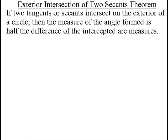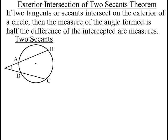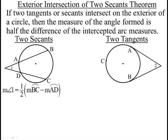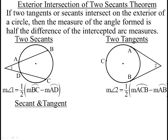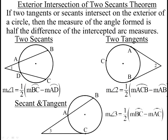This is the last theorem for today: the exterior intersection of two secants. Two secants can intersect outside the circle, and this exterior angle is going to be half the difference of the two arcs. When the point of intersection is inside, it's half the sum; when it's outside, it's half the difference — and it's always the big arc minus the little arc. It could be two secants, two tangents, or a secant and a tangent. For example, the measure of angle 3 would be half the difference of the big arc BC minus the little arc AC.